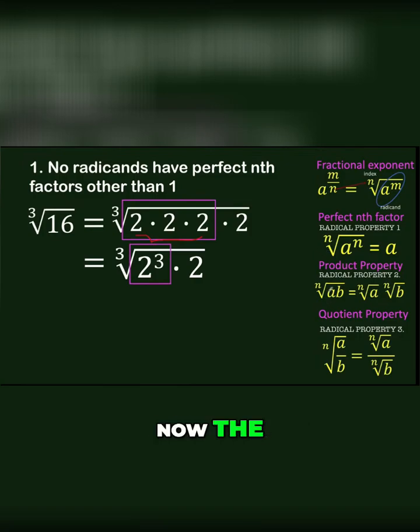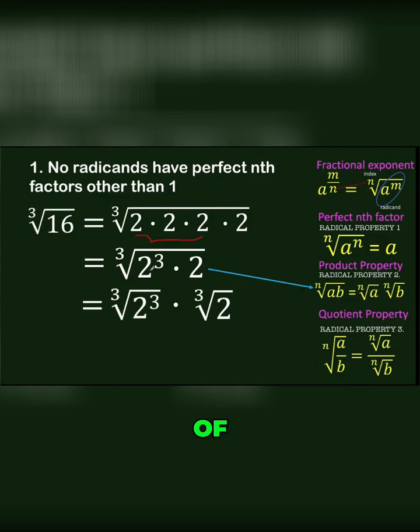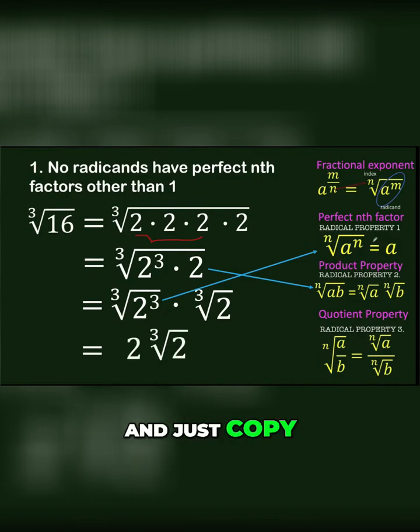Then, applying the product property of radicals, we can write this as two factors: the cube root of 2³ times the cube root of 2. Again, you have a perfect n-factor, which simplifies to base 2, giving us 2 times the cube root of 2.